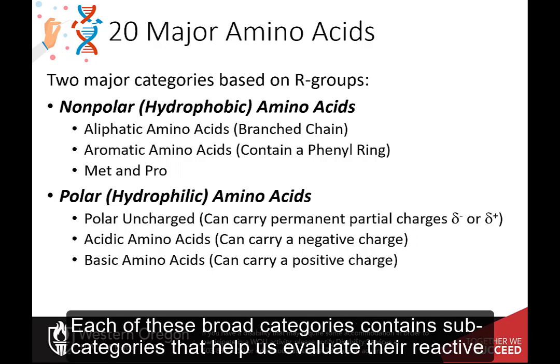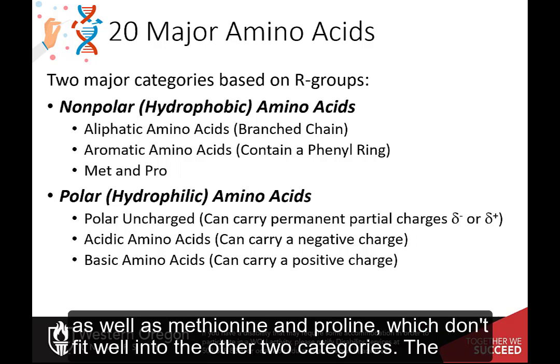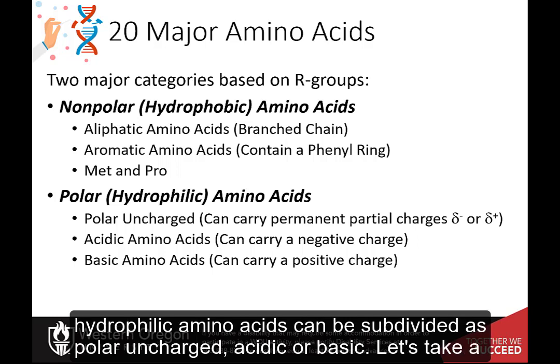Each of these broad categories contains subcategories that help us evaluate their reactive potential. For the nonpolar amino acids, this includes the aliphatic and aromatic amino acids, as well as methionine and proline, which don't fit well into the other two categories. The hydrophilic amino acids can be subdivided as polar uncharged, acidic, or basic.